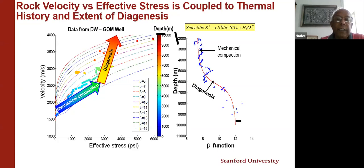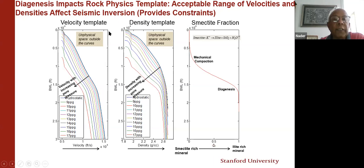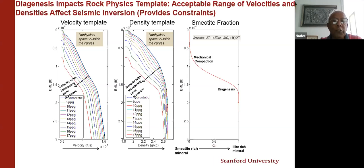Here is the mechanical compaction region, and here is the diagenesis region. The next slide transforms that information into what I call a rock physics template. The rock physics template has two components: a velocity template (velocity as a function of depth on the lower right scale) and a density function (increasing density as a function of depth). The first advantage is that I want to restrict the physical space from the unphysical space, so that when I do my seismic inversion, I don't enter the unphysical space. Anything within this template I call the physical space — a restrictive definition at this point, but what I use to constrain my inversion.